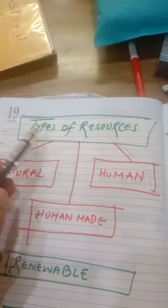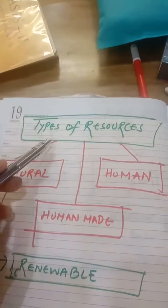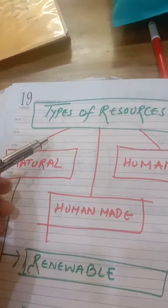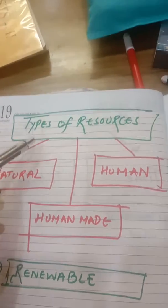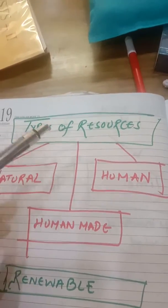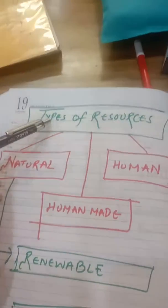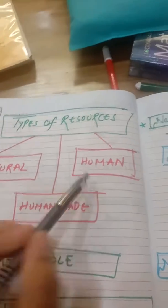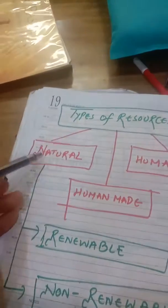Now let's come to types of resources. Children, there are three basic types of resources. In the last year, resources have been classified into different types, but this year CBSE has made your life easier — they have discarded all other classifications and to keep it simple, they have classified into three types: natural resources, human-made resources, and human resources. We will discuss one by one.